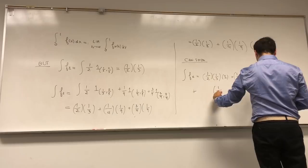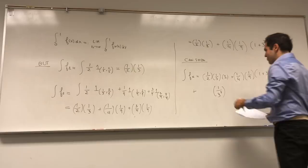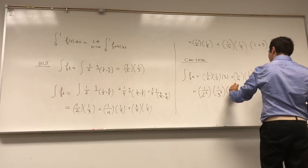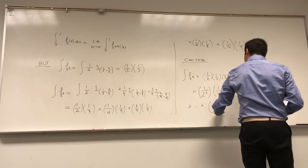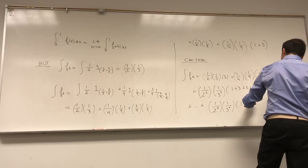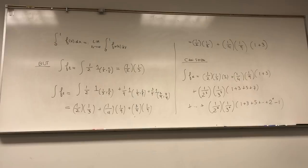Following this pattern, the integral of F_n becomes: 1/2 × 1/3 × 1, plus 1/4 × 1/9 × (1+3), plus 1/8 × 1/27 × (1+3+5+7), and so on, up to (1/2^n) × (1/3^n) × (1 + 3 + 5 + … + (2^n − 1) terms), where the last term in the sum is (2^(n−1))/(2^n) according to the definition.